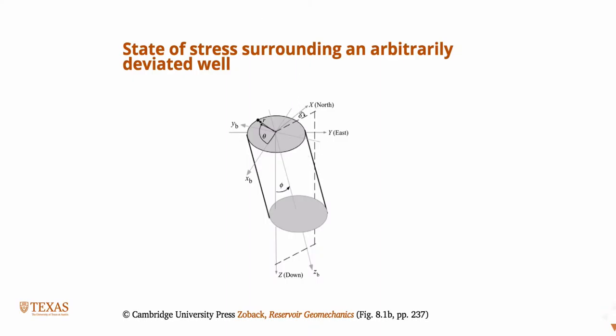Delta, delta here, which is the azimuth of the toe of the wellbore. And phi, which is the angle of deviation. And it goes from vertical to horizontal. So if phi is zero, it's a vertical well. If phi is 90, it's a horizontal well.